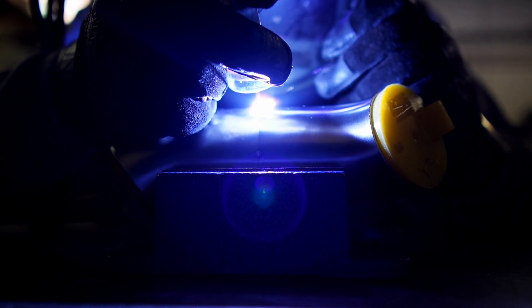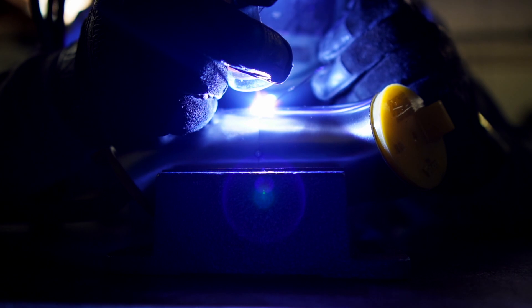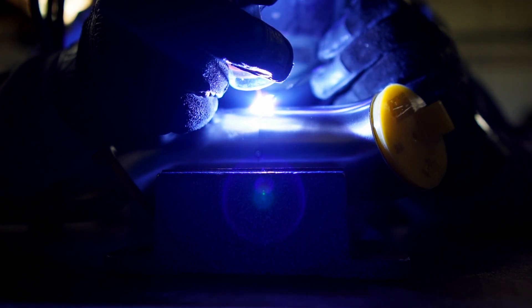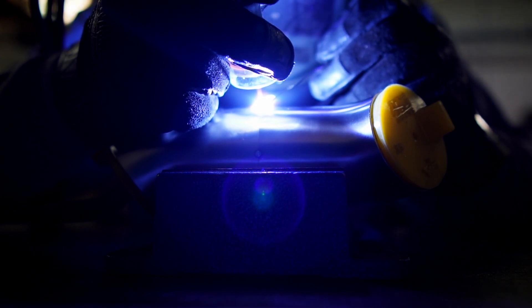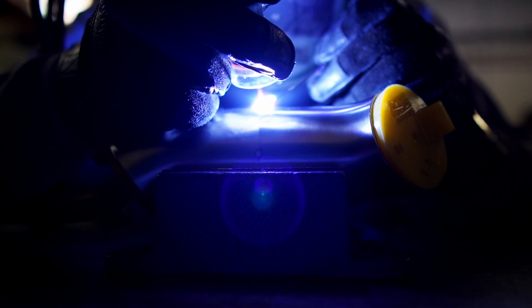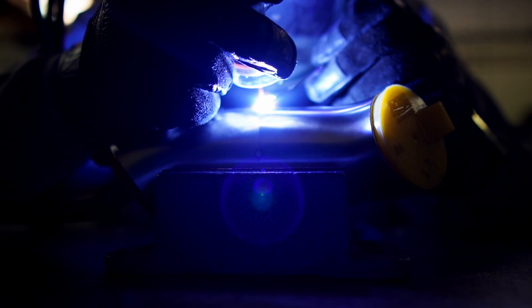The grind angle on a tungsten also completely changes the arc cone characteristics. A sharp tungsten ground at 25 degrees will have a wider arc cone and give less penetration due to it not being as focused as, say, a bluntly ground tungsten with a 45 degree grind.